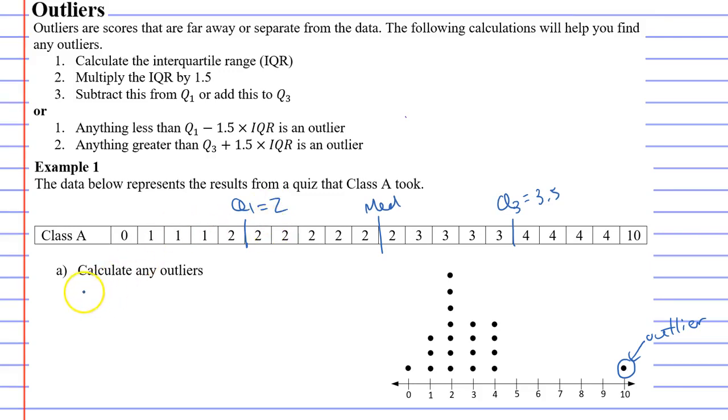So looking at step 1 in the first method, the interquartile range can be found by going quartile 3 minus quartile 1 or 3.5 minus 2. This gives us a value of 1.5.